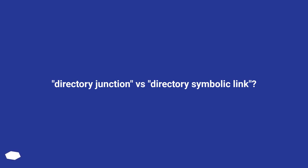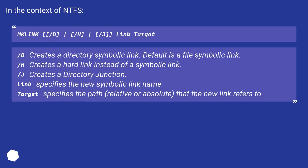Directory Junction vs. Directory Symbolic Link. In the context of NTFS, mklink /d link target creates a directory symbolic link — the default is a file symbolic link. /h creates a hard link instead of a symbolic link. /j creates a directory junction. 'link' specifies the new symbolic link name, and 'target' specifies the path, relative or absolute, that the new link refers to.